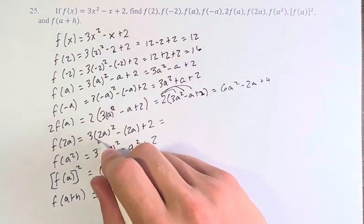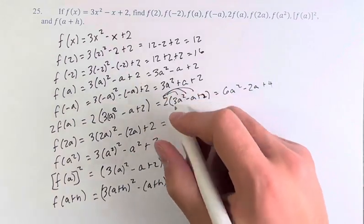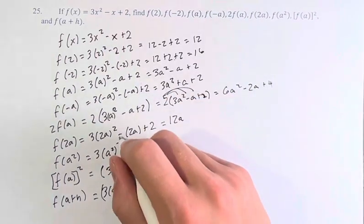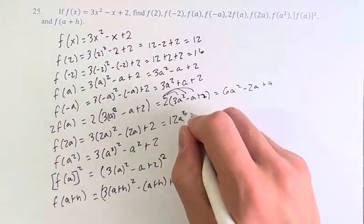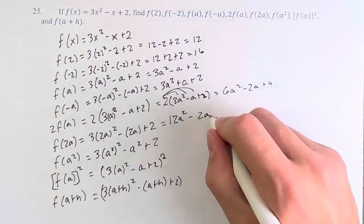f of 2a. 2a squared, you have to square the 2 as well, so that becomes 3 times 4a, which is 12a, minus 2a. Sorry, 12a squared, you have to square the 2a, and you have to square the a, minus 2a, plus 2.